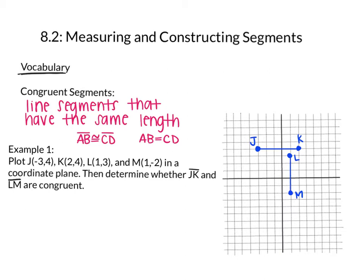So I drew those segments. I want to know, are they congruent? So what I'm going to do is I'm actually going to find the length of JK, and I'm going to find the length of LM. So let's find the length of JK. The length of JK is basically how long it is, or in this case, how many units is it? So J to K is 1, 2, 3, 4, 5 units. So the length of JK is 5.